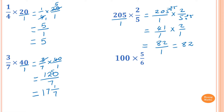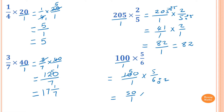100 times 5 over 6. So 100 is just like 100 over 1, so I just rewrite it as 100 over 1 times 5 over 6. Now 100 and 6 — I can simplify by dividing both by 2. So 100 divided by 2 is 50, and 6 divided by 2 is 3, giving 5 over 3. So now I just multiply: 50 times 5 is 250, and I just write that down, giving 250 over 3.